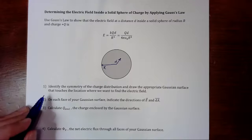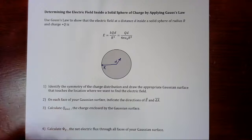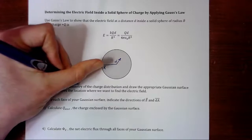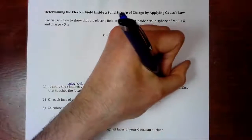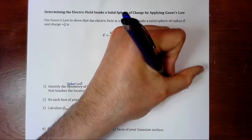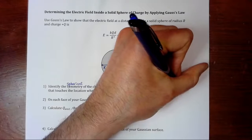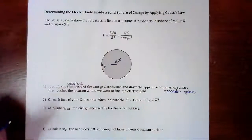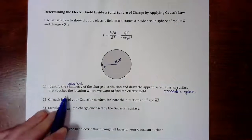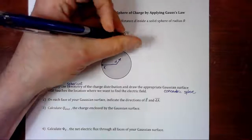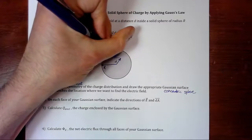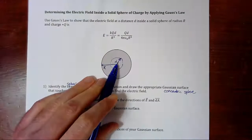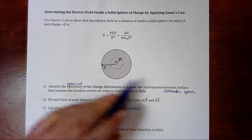So step one: identify the symmetry and draw the appropriate Gaussian surface. So our symmetry is spherical symmetry, and our appropriate Gaussian surface is going to be a concentric sphere. And it needs to touch the location where we want to find the electric field. So that means our Gaussian sphere is going to have a radius of d, and it has the same center as the charged sphere.